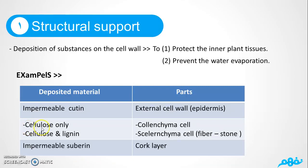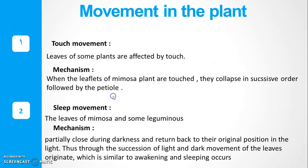What about cellulose? We can find cellulose alone or together with lignin. Cellulose alone is found in collenchyma cells, but cellulose together with lignin is found in sclerenchyma cells. There are two types of sclerenchyma cells: fibers and stone cells. Stone cells have that name because of the large amount of lignin they contain. When asked to give a reason why structural support is considered a permanent one, you should say: because of the possession of hard substances in the cell wall.